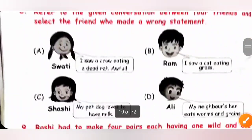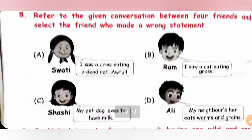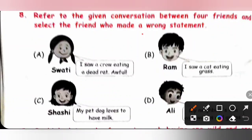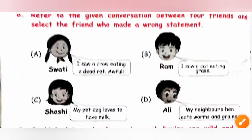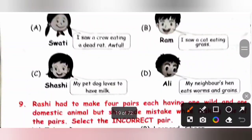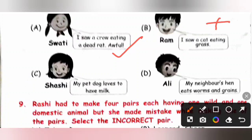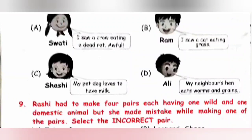Question 8: Select the friend who made a wrong statement. Swathi said she saw a crow eating a dead rat — correct. Ram said he saw a cat eating grass — incorrect, because cats don't eat grass. Shashi said her pet dog loves to have milk — correct. Ali said his neighbor's hen eats worms and grains — correct. So option B, Ram, made the incorrect statement. Option B is the correct answer.